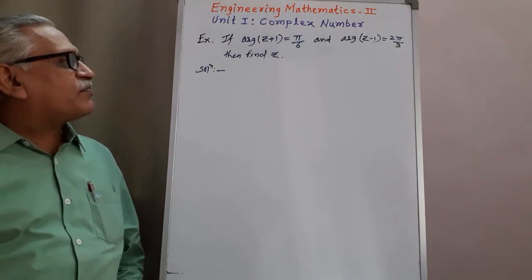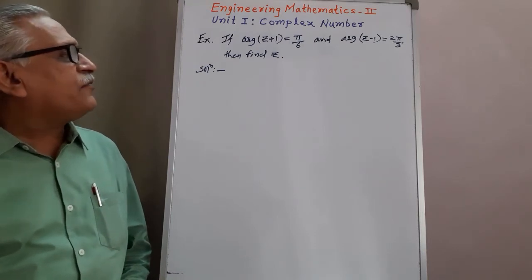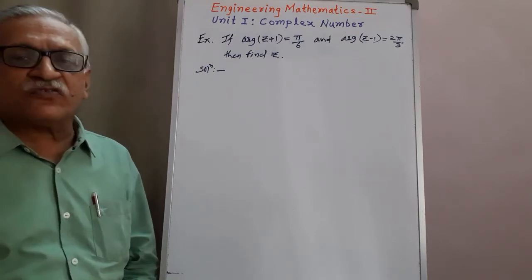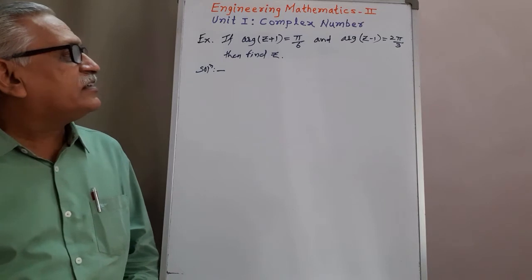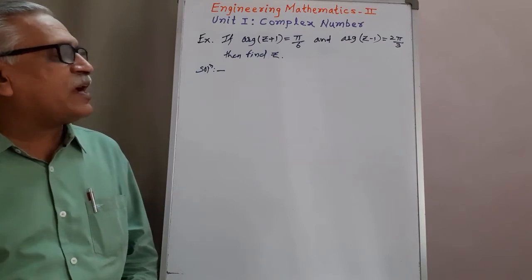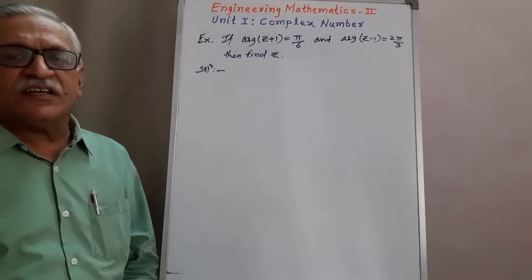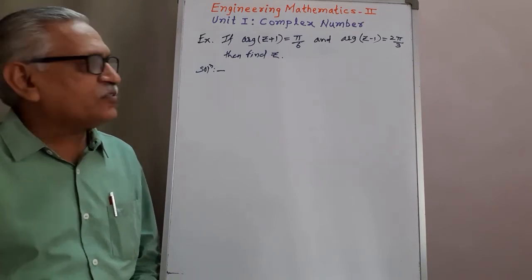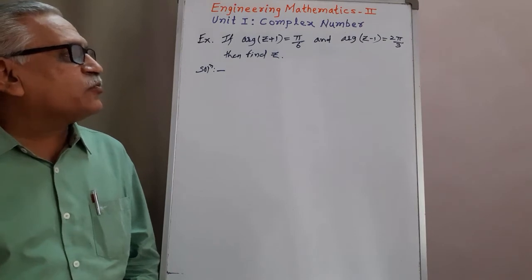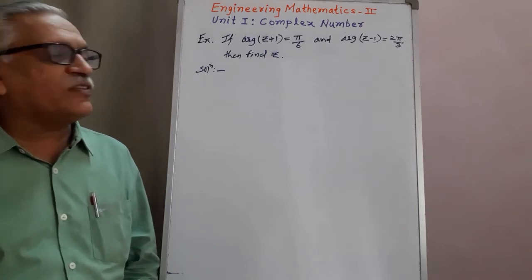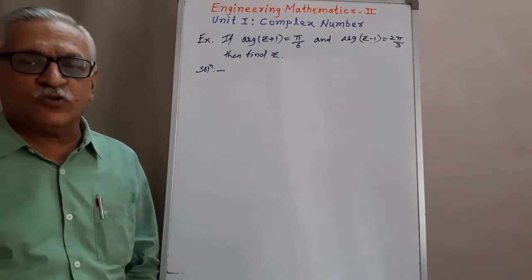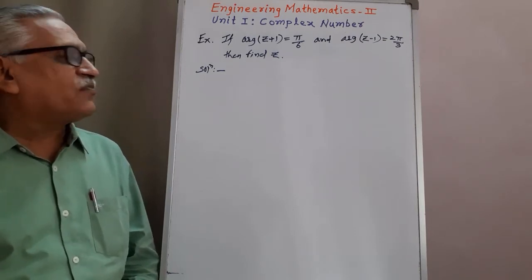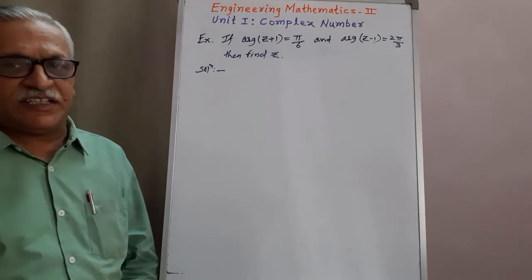Let us see the example. If the argument of z plus one is equal to pi by six — argument means amplitude — and the argument of z minus one is equal to two pi by three, then find z.